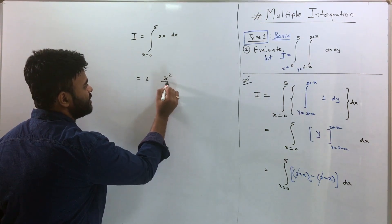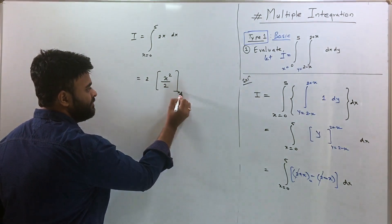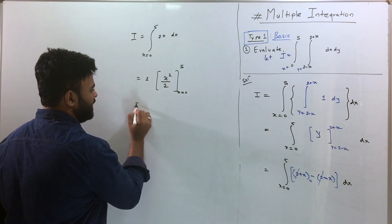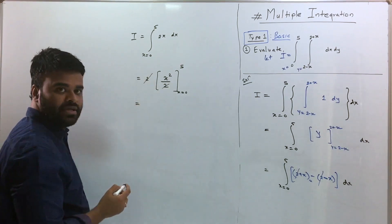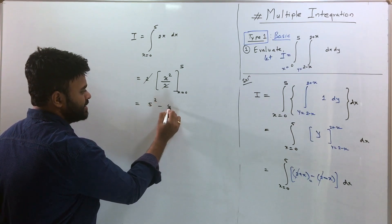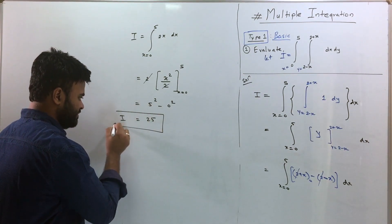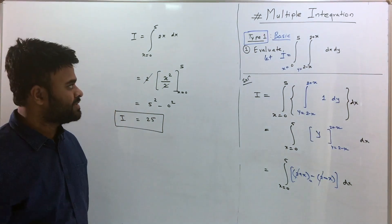Now let's integrate this. This is 2 out, the integration of X is X square by 2, and this will give you X is equal to 0 to 5. 2 will cancel out. Now you put upper limit and lower limit: it is going to be 5 square minus 0 square which is 25.